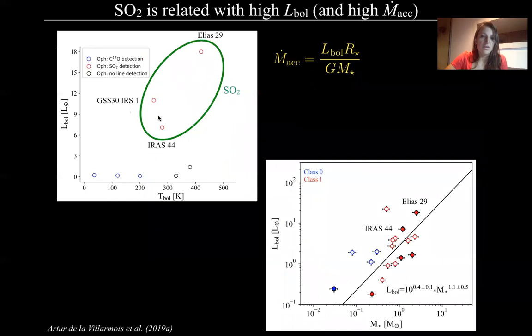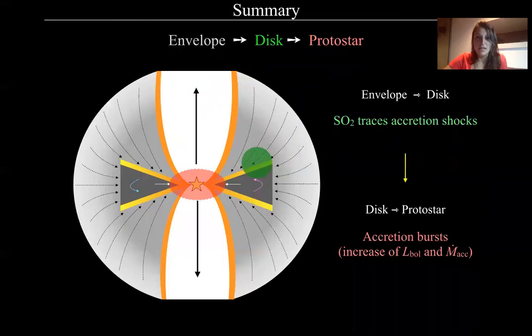And also the SO2 is linked to the higher mass, higher bolometric luminosity, therefore to the high mass accretion rates that we can link again to this plot. So these two are the sources with SO2 emission. So somehow this SO2 can be a good tracer of high mass accretion rates.